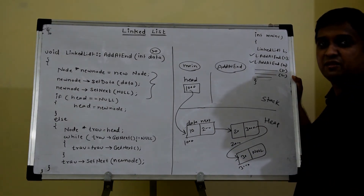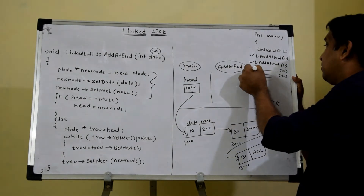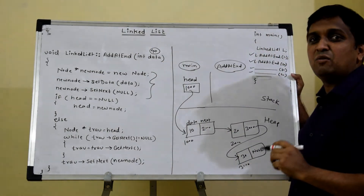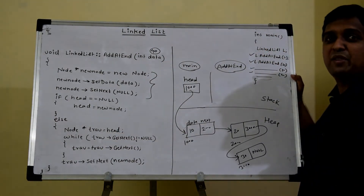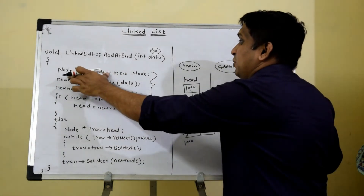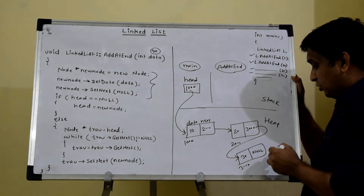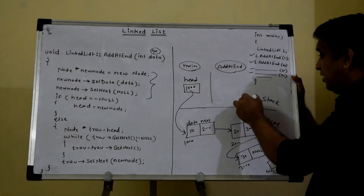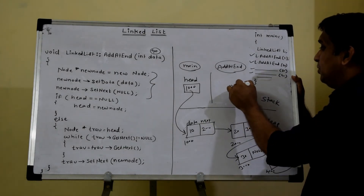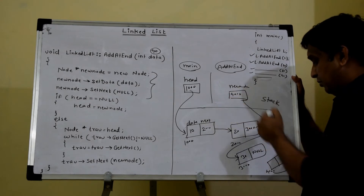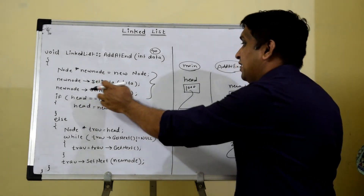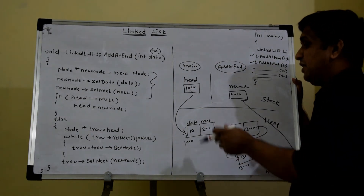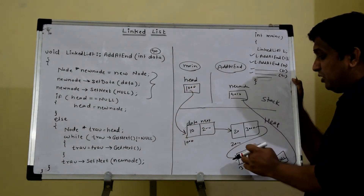Now suppose the function is called for the fourth time with value 40. Let's dry run the else part. Inside the definition, node* new_node = new node allocates one new node and its address — say 4000 — is stored in the pointer new_node. The data part is set with 40 and the next part is set with null. So we have a linked list with three nodes and one separate new node not yet linked.